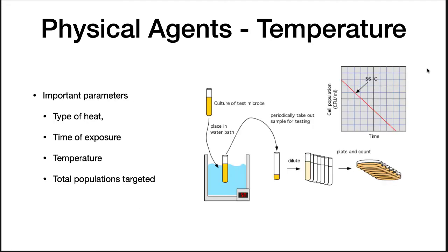When using heat to decrease the number of bacteria in a sample, four parameters need to be considered: the type of heat — moist versus dry; the time of exposure — the longer it's exposed to the heat, the more microorganisms get killed; the temperature — the higher the temperature, the more organisms get killed; and the total population targeted — the larger the population, the longer or higher temperature you're going to need to use to get rid of all the organisms.